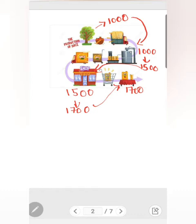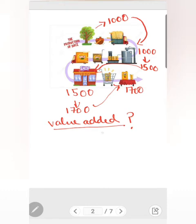According to the value added method, GDP is the sum total of value added by all productive units. Value added is the addition made by a productive unit over and above the value of raw material. Let us see how much value is added by each productive unit. Starting with the orchard owner — since there is no information about the value of raw material, value added by the orchard owner is rupees 1000.